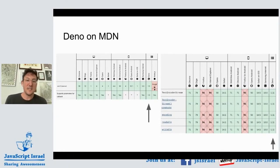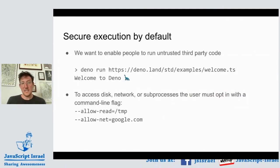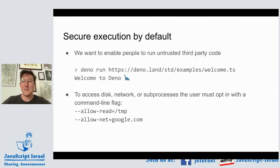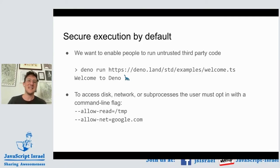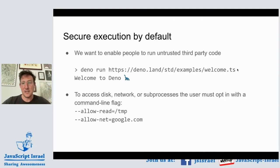Deno has secure execution by default. In Node, when we were developing it, we plugged all sorts of holes in the system so you could access the file system or network. V8 is a secure sandbox, and once you plug a hole in it to open network connections, you've kind of ruined that sandbox feature. So by default, Deno keeps that sandbox intact.